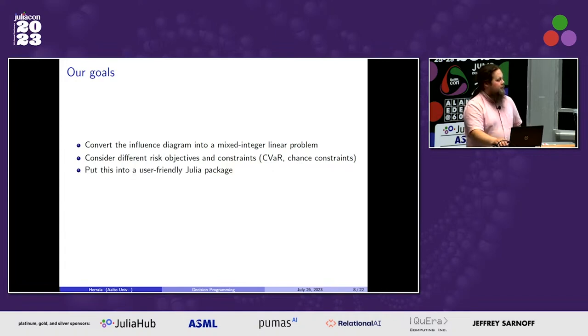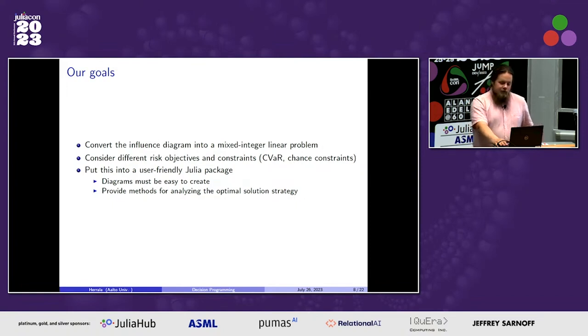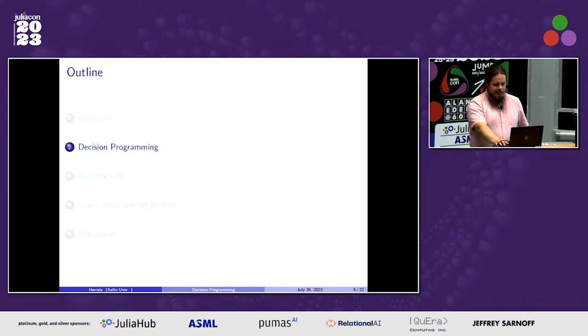Why am I presenting this at JuliaCon? We wanted to put this into a very user-friendly Julia package so that everyone could take their favorite influence diagram and then solve it. For the package to be user-friendly, the diagrams should be easy to create. It's easy to draw one, but we didn't go as far as making a function that takes a picture and converts it into a diagram, but we tried to make the interface easy otherwise. Once you get the optimal strategy, you should also be able to somehow analyze it and see your utility distribution, what's the optimal strategy, those kinds of things.